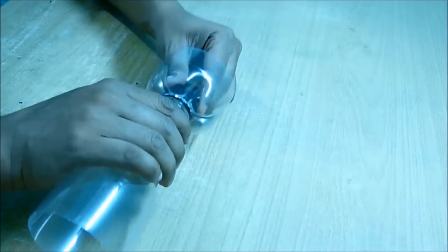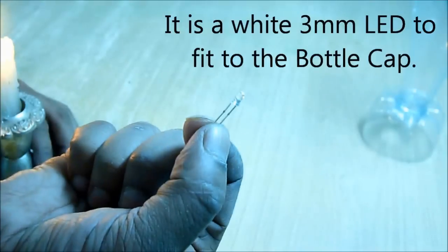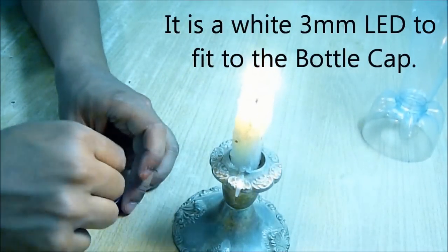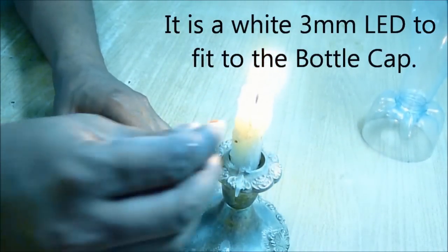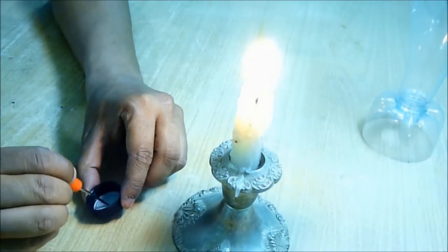Tighten the top part with the cap. This is the basic structure of the vase. Now we are going to decorate it. We will fit a white bright LED on the cap.